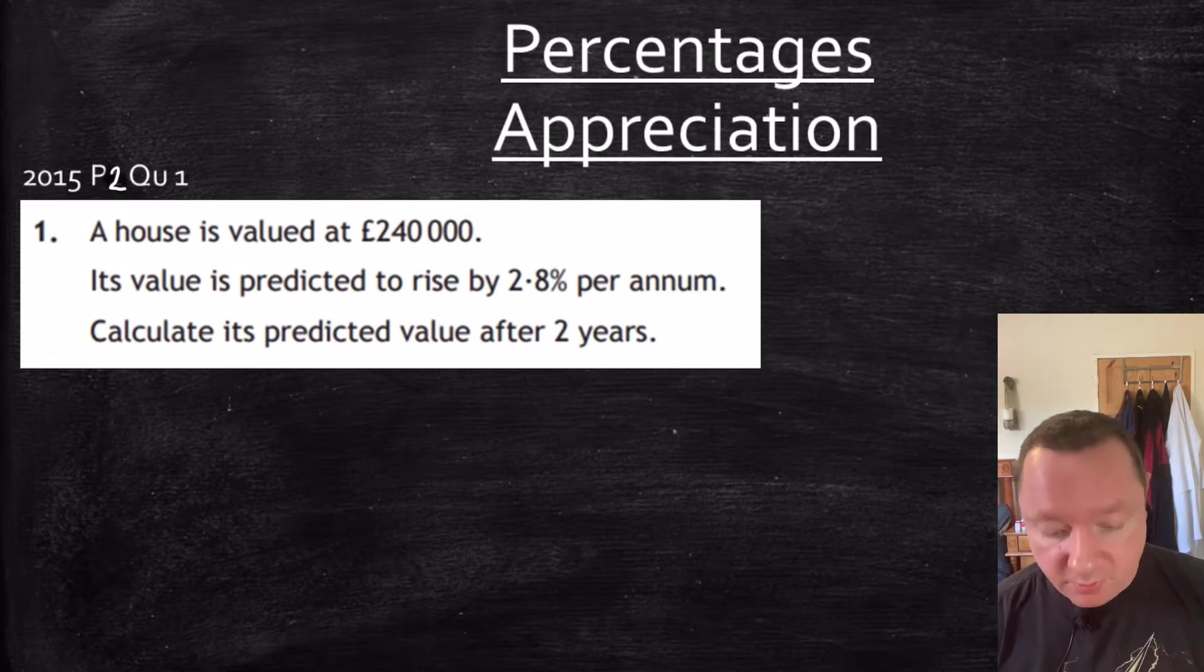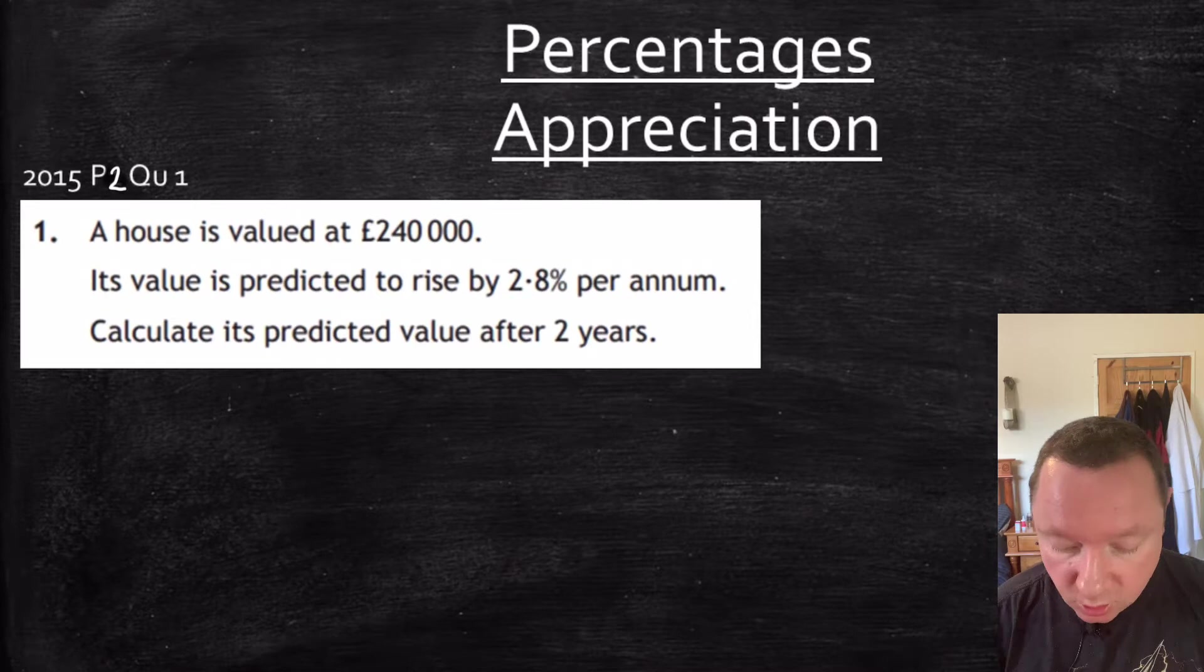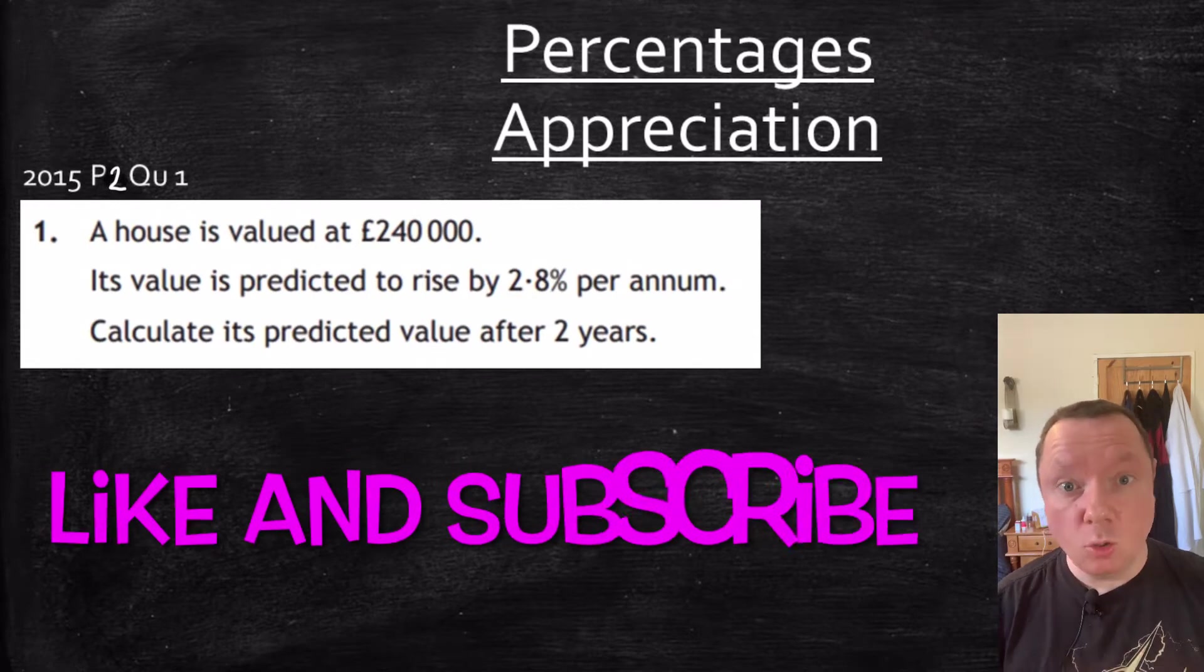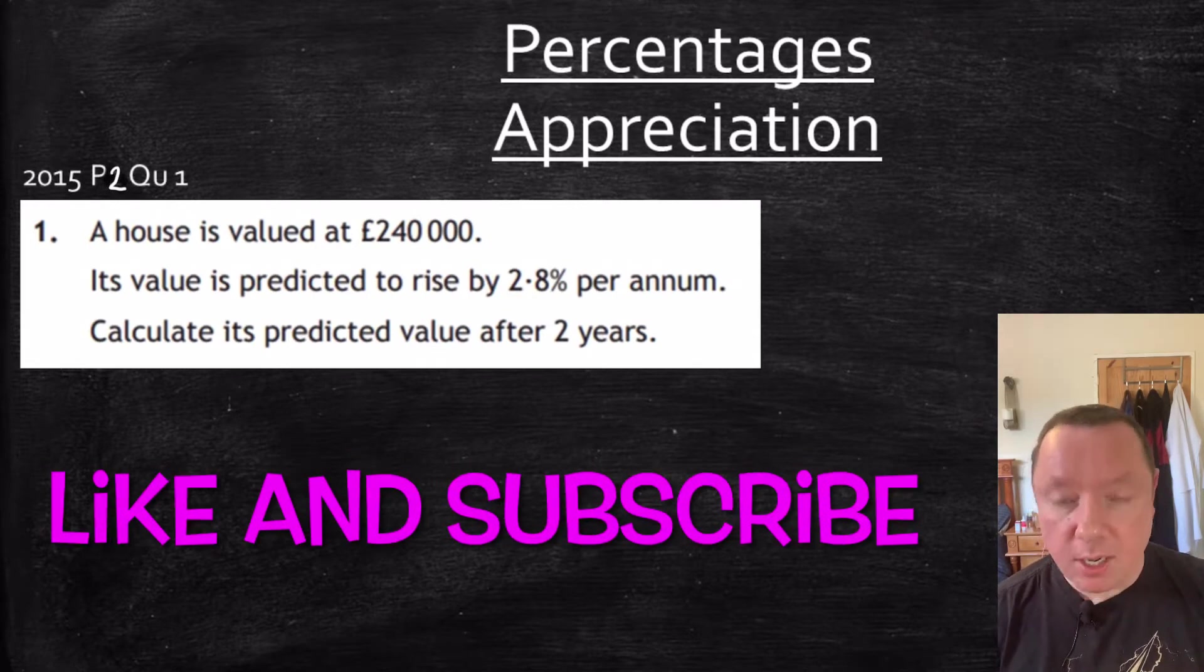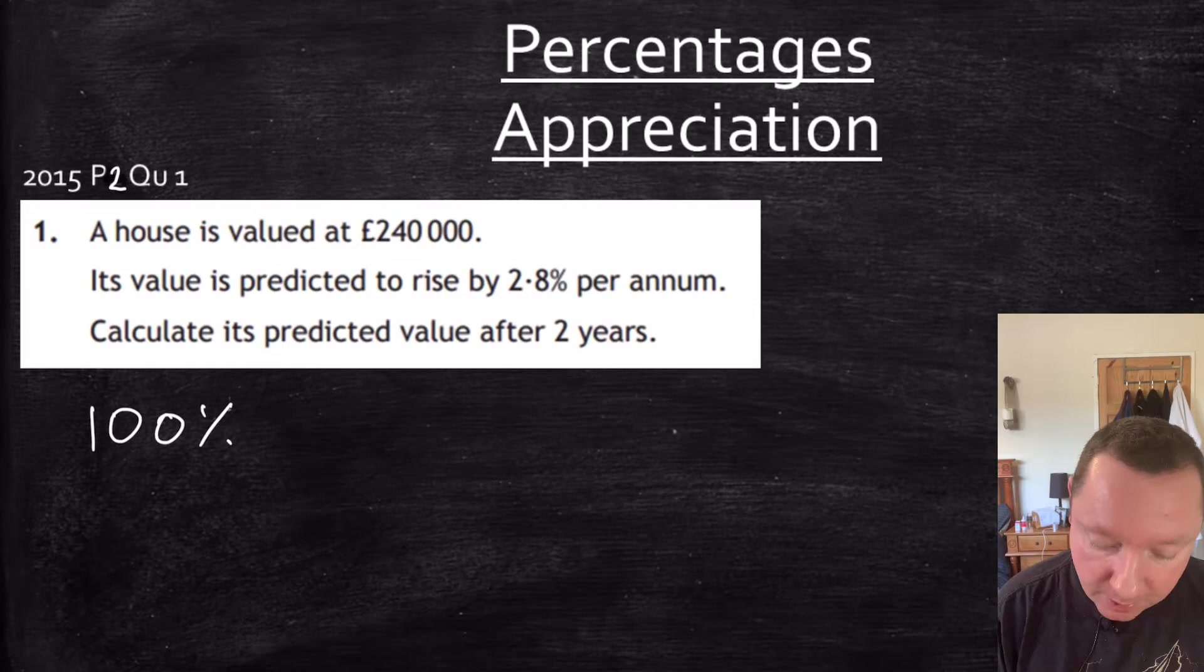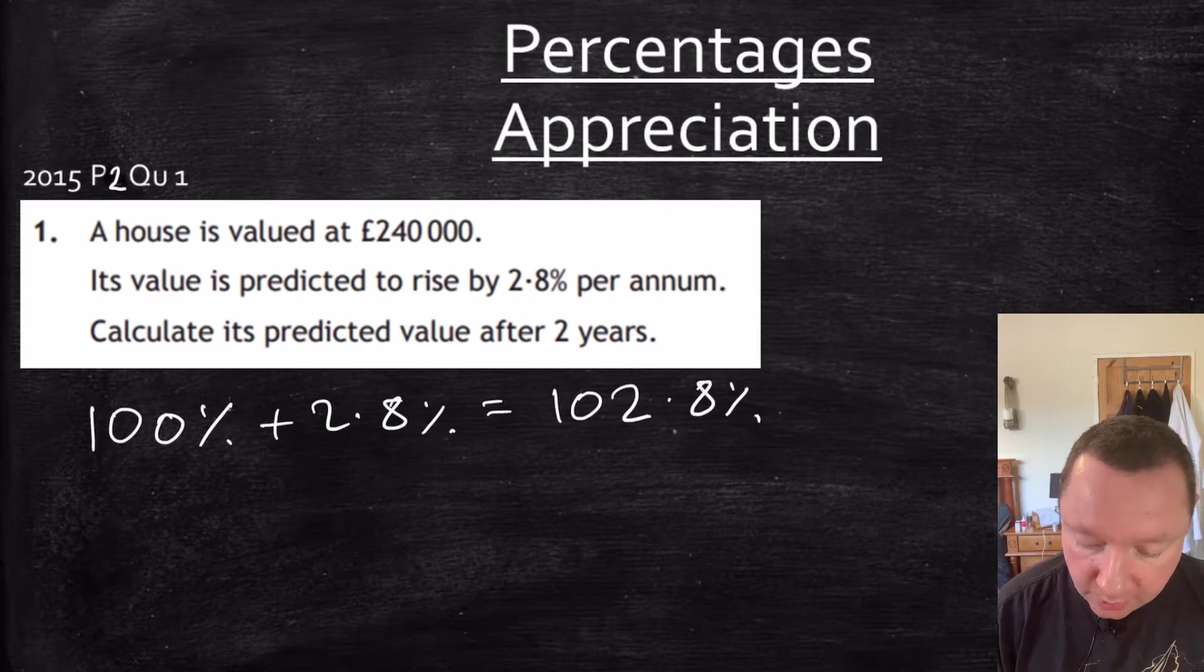So this is from a 2015 paper, question one. A house is valued at £240,000. It's predicted to rise by 2.8% per annum. Calculate its predicted value after two years. Step one's always the same. We need to find the multiplier, what we're going to times by. So we're starting off with 100%. And it's rising by 2.8%. So that gives me 102.8%. Now we need to change that to a decimal.